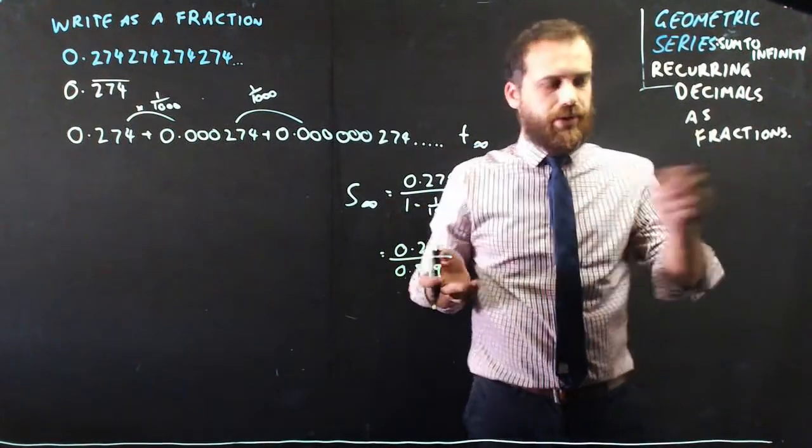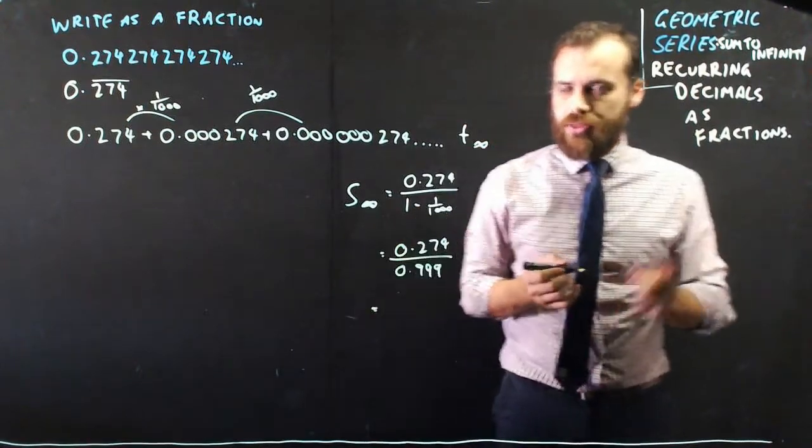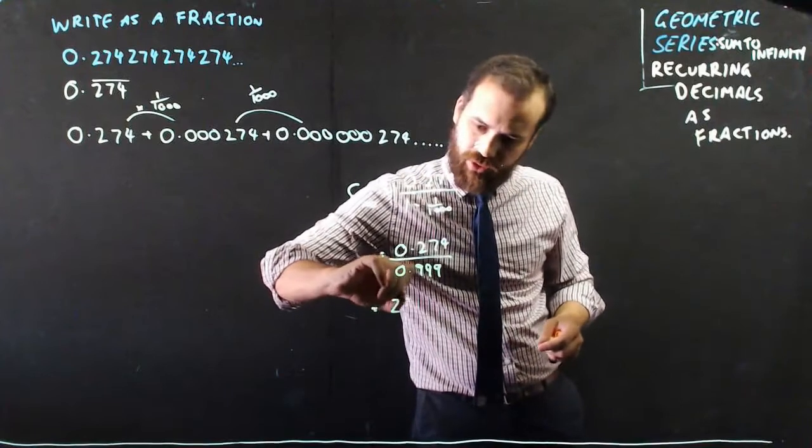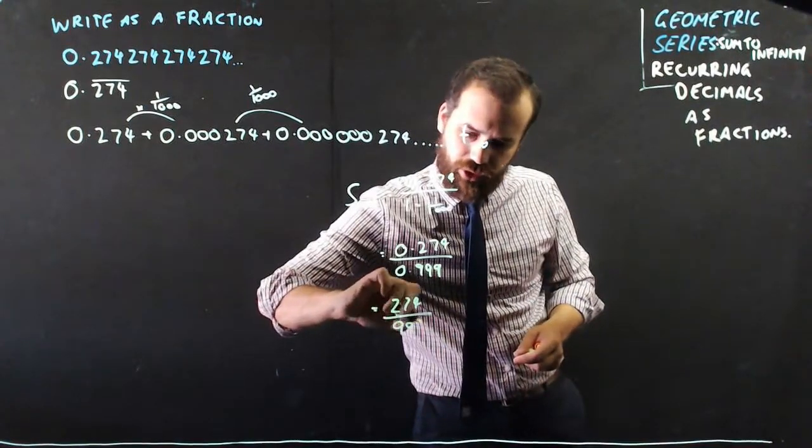That's a fraction, but you really want to write it in whole numbers. So I can multiply top and bottom by 1000, and I get 274 over 999.